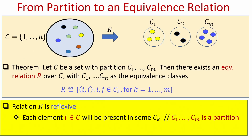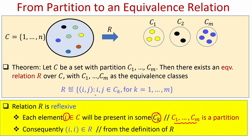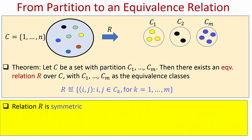You take any element i from the set C. I have to show that (i, i) is present in the relation R. Since C_1 to C_M is a partition of set C, the element i will be present in one of the subsets, say C_K. When applying the construction rule, I see that element i is in C_K and I add the ordered pair (i, i) to R. So for any element i in C it is guaranteed that the ordered pair (i, i) is present in R, which proves that relation R is reflexive.